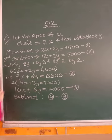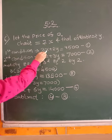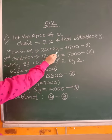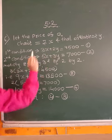They have said 3 chairs and 2 tables. So cost of 1 chair is x. So cost of 3 chairs is 3x. Cost of 1 table is y. Cost of 2 tables is 2y. So 3x plus 2y is 4,500.